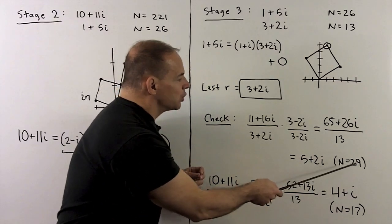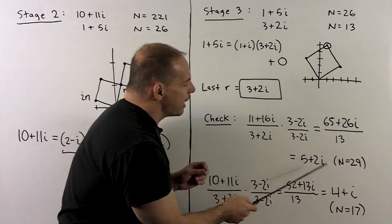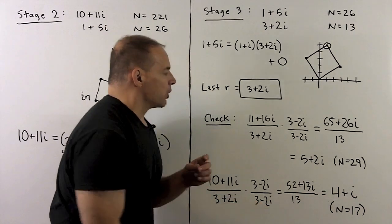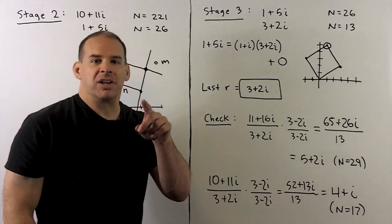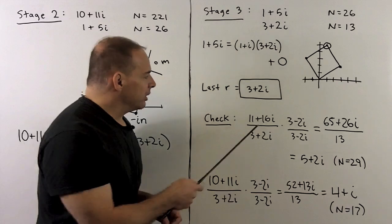We note that the N's are 29 and 17. So these are actually going to be primes in the Gaussian integers. So not only do we have the greatest common divisor, but we've also completely factored these two integers.